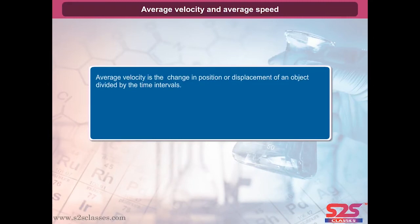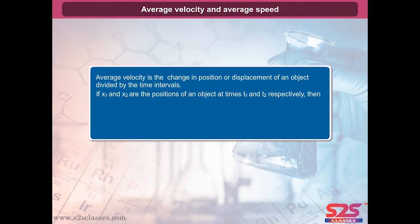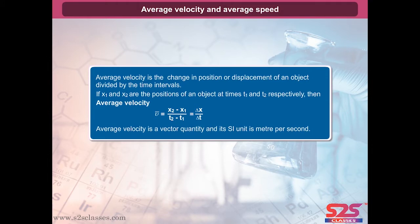Average velocity: velocity is the change in position or displacement of an object divided by the time interval. If X1 and X2 are the positions of an object at times T1 and T2 respectively, then the average velocity V-bar equals X2 minus X1 upon T2 minus T1, which equals delta X upon delta T. Average velocity is a vector quantity and its SI unit is meter per second.